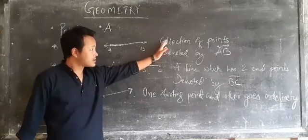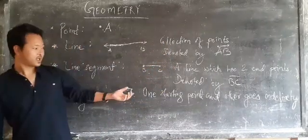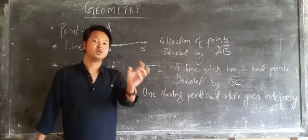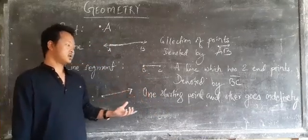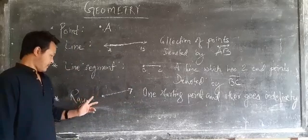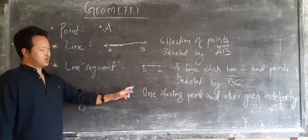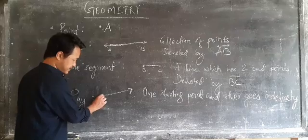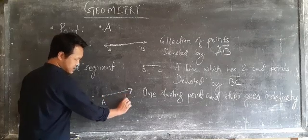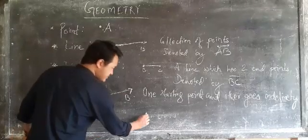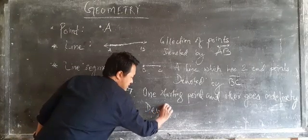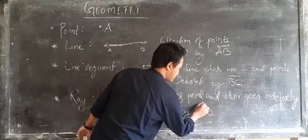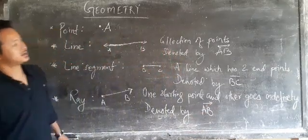Whatever definition I have written is only to understand. Even if you write it like this, it will be correct only. But most of the time, you won't see this on book. This is only to understand. So one is starting point and one goes indefinitely. That is called ray. If I suppose give this as A and this as B, what we can do? It is denoted by AB.